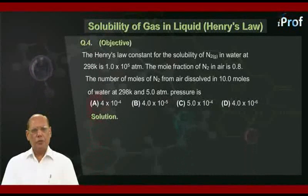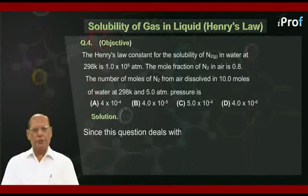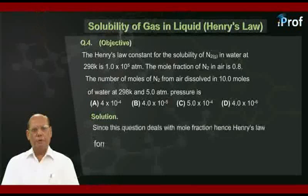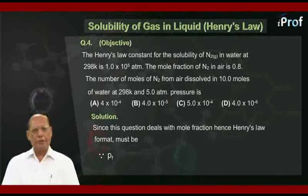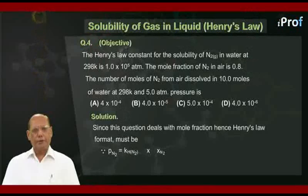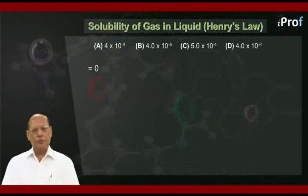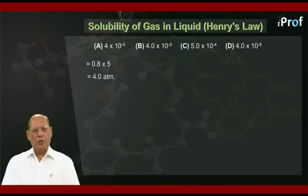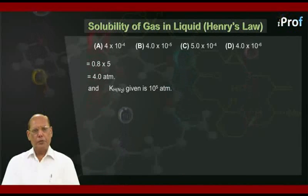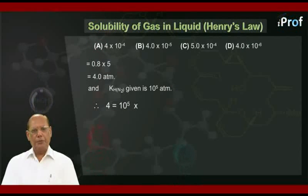Let us solve this question. Since this question deals with mole fraction, Henry's law form must be: partial pressure of nitrogen equal to kH(N₂) into x(N₂), where x means mole fraction of nitrogen. Further, pN₂ required is equal to 0.8 into total pressure, that is 0.8 into 5, which is 4.0 atmosphere. Henry's law constant for nitrogen is given as 10 to the power 5 atmosphere. Therefore, we can write the equation: 4 equal to 10 to the power 5 into x(N₂).